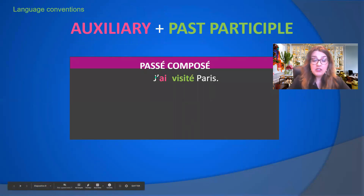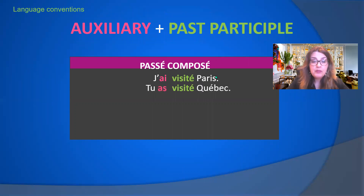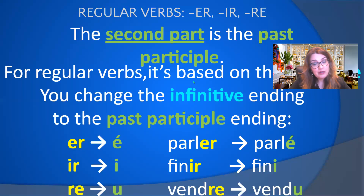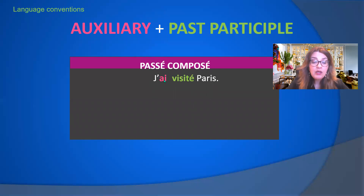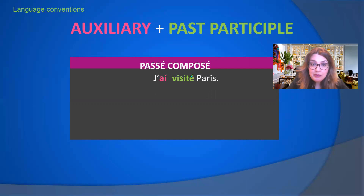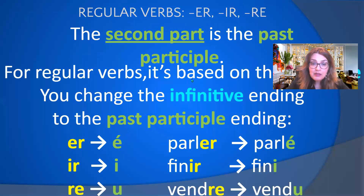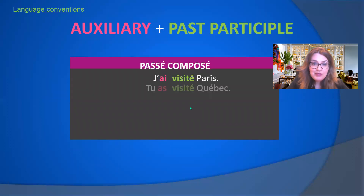Let's look at the conjugation of the verb visiter. Visiter is a regular ER verb — it ends in ER in the infinitive. We drop the ER and add é (e accent aigu). We start with the conjugated form of avoir: subject pronoun, auxiliary verb, past participle, then the rest of the sentence. J'ai visité Paris — and the past participle ends in é because the infinitive ends in ER.